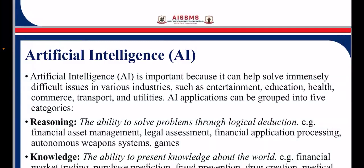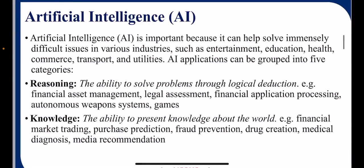AI is important because it can help solve difficult problems. What is reasoning and knowledge? Reasoning is the ability to solve problems through logical deduction. Knowledge is the ability to represent knowledge about the world. We can use AI to overcome human limitations — it can do a job without taking rest.